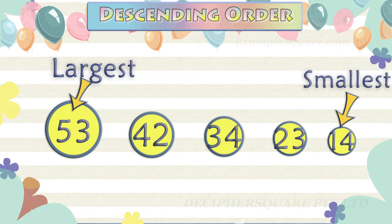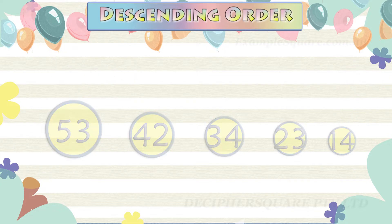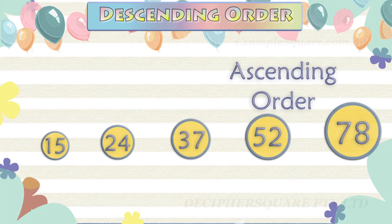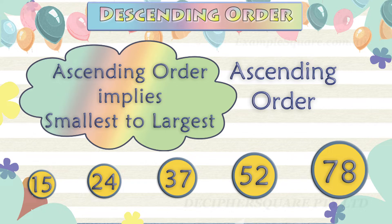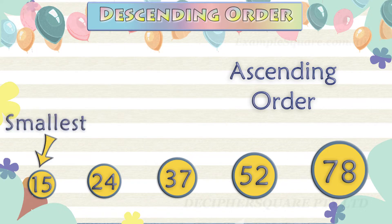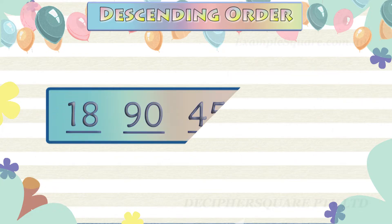Arranging numbers in descending order is the opposite of arranging numbers in ascending order. Numbers arranged in ascending order are in increasing order, that is from the smallest number to the largest number.